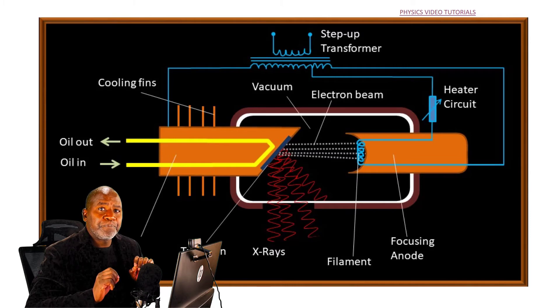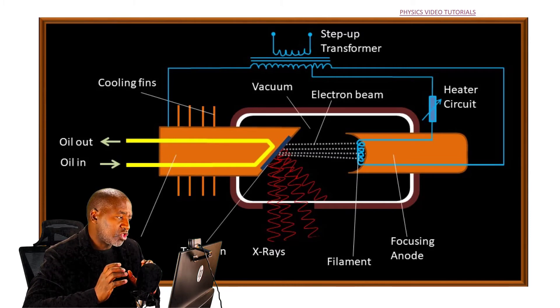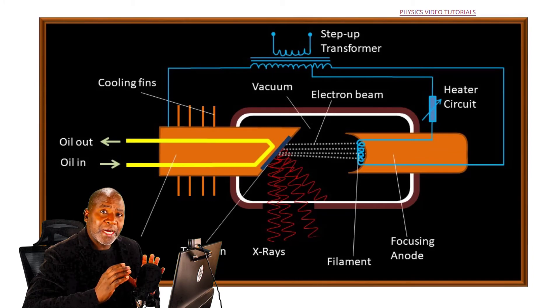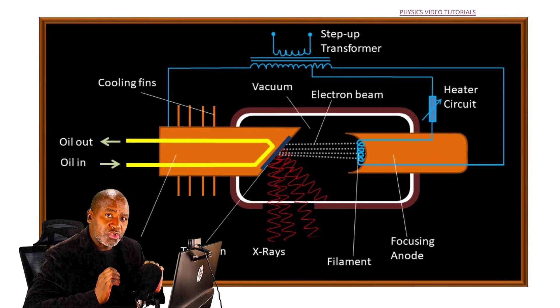By intensity we mean increasing the number of x-ray photons which flow past a given point in the tube per unit time.